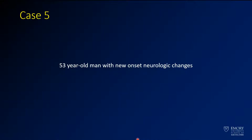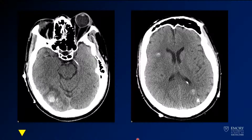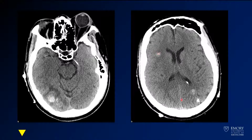Case 5 is a 53-year-old man with new neurologic changes. Here we have a couple of images from an axial CT through several different levels. You've got an area of hyperintensity here in the right occipital lobe, another one in the right deep frontal white matter, another one in the left occipital region, and here you've got something that looks kind of bright as well.